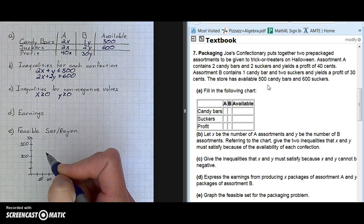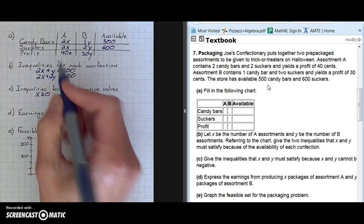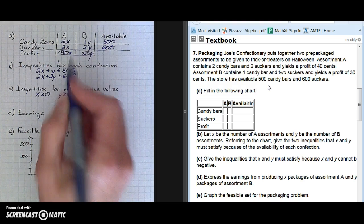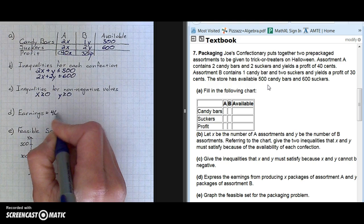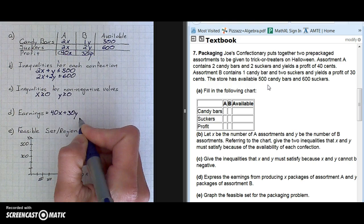Part D, express the earnings from producing X packages of assortment A and Y packages of assortment B. So the earnings comes from this profit category, 40X plus 30Y. Remembering that those are in cents.